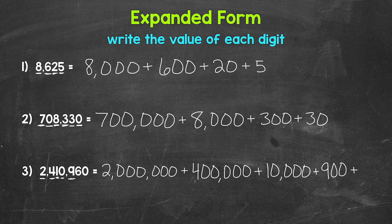Moving to the next digit, we have a 6 in the tens place. This 6 has a value of 60. And then we have a 0 in the ones place, so we don't have anything to write for the ones place.